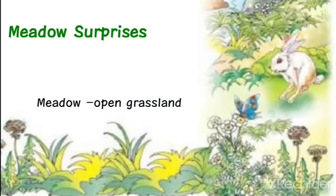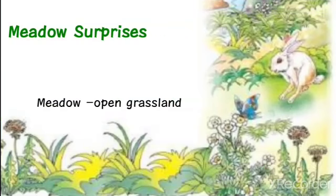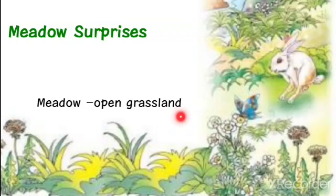First of all, we will see what is Meadow Surprises. The title of the poem is Meadow Surprises. Meadow means open grasslands. So here we will talk about the open grassland — what we will see in these open grasslands, in the garden. That we will discuss in this poem.